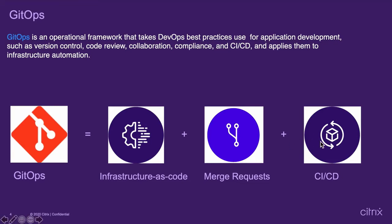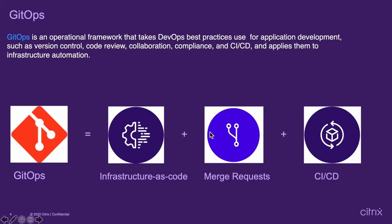Any change to infrastructure and/or application is described as code. GitOps automates the infrastructure update using a Git workflow with continuous integration and continuous delivery. When the new code is merged, the CI-CD pipeline enacts the change to the environment. In summary, GitOps is when the infrastructure and/or application state is fully represented by the content of a Git repository. Any changes to the Git repo are reflected in the corresponding state of associated infrastructure and application through automation.